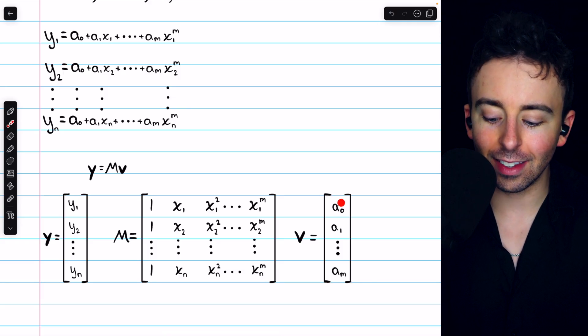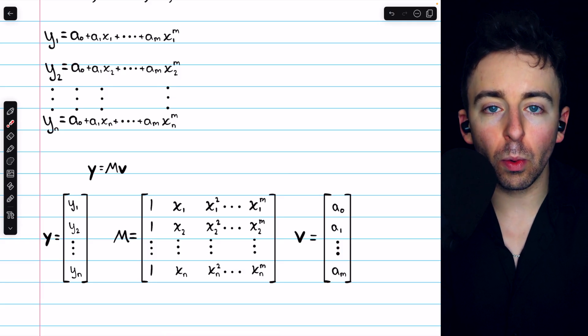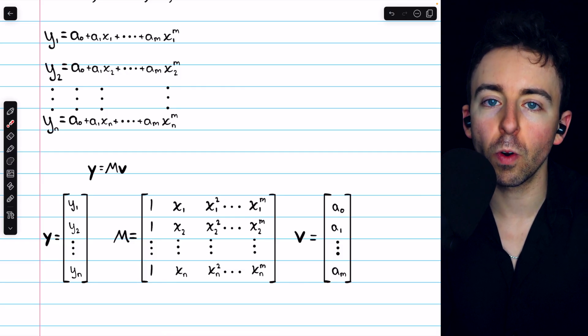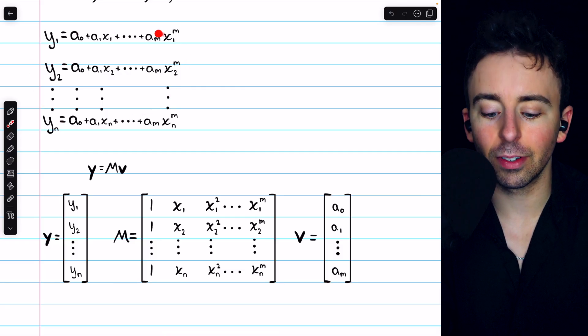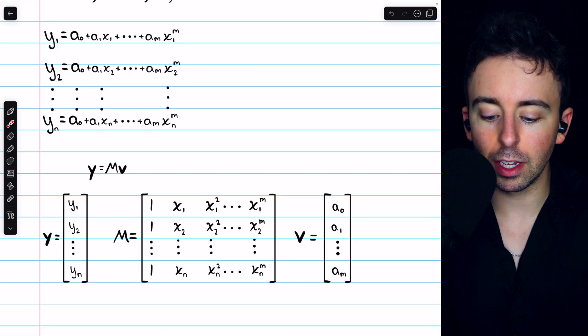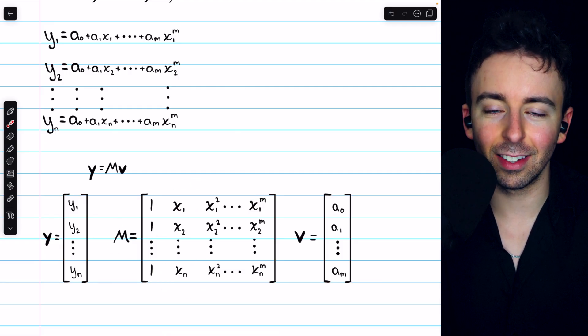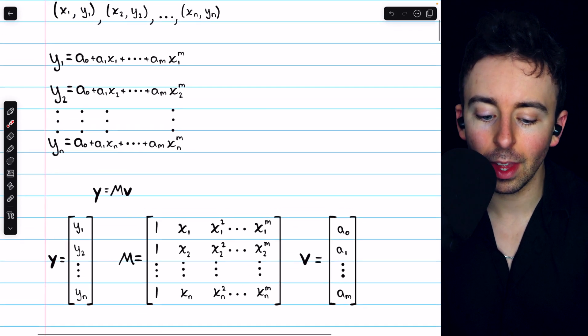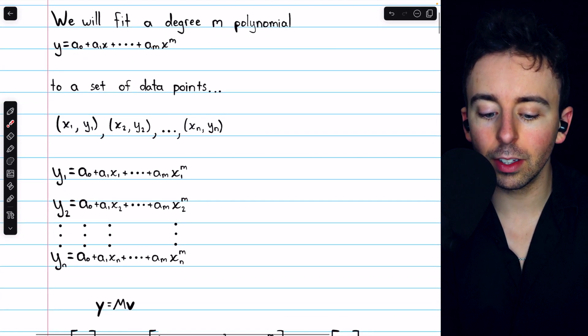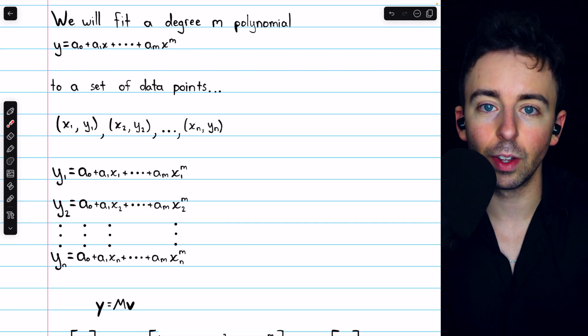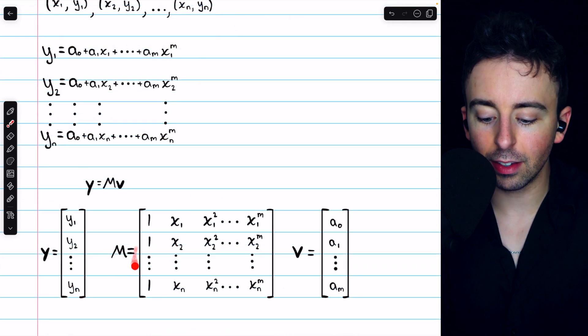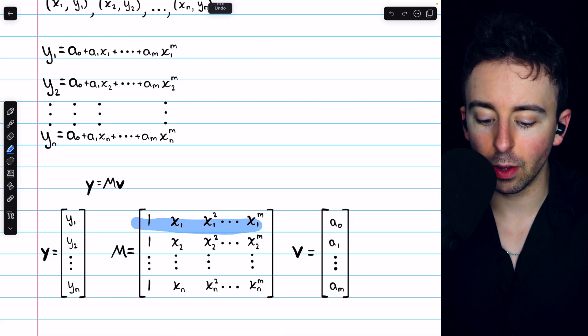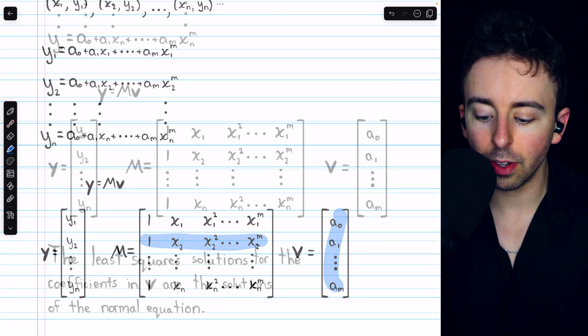It sounds a little weird because a0 through a_M, those are what we would typically call the coefficients of the polynomial that we're trying to find. But with respect to this linear system, M, all of these powers of x, this is really the matrix of coefficients in the context of the linear system. In the context of the polynomial, the unknown a's are the coefficients. But in the linear system, it's all of these powers of x, which are known, and which are getting multiplied by those unknown a values. Our goal, of course, is to find the coefficients of a best fitting polynomial.